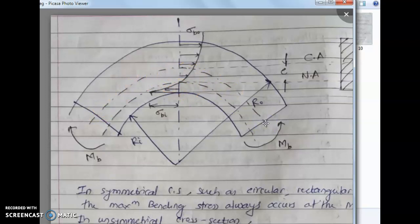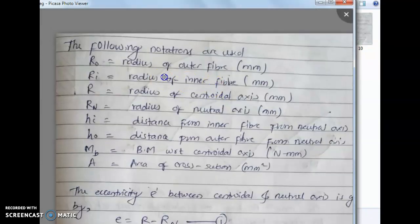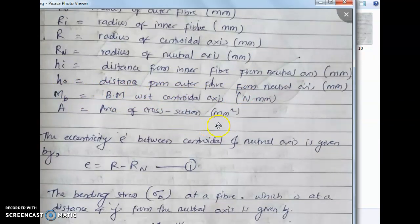The notations are: R_O — radius of outer fiber in mm; R_I — radius of inner fiber in mm; R — radius of central axis; R_N — radius of neutral axis; H_I — distance from inner fiber to neutral axis; H_O — distance from outer fiber to neutral axis; M_B — bending moment with respect to central axis; A — area of cross-section.